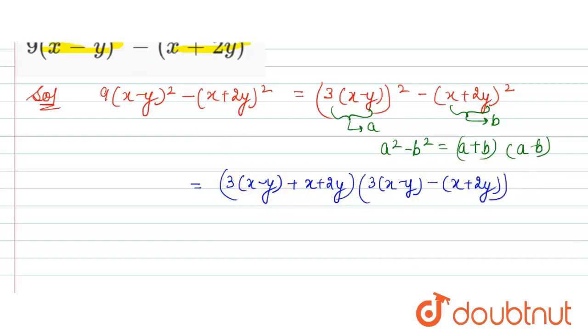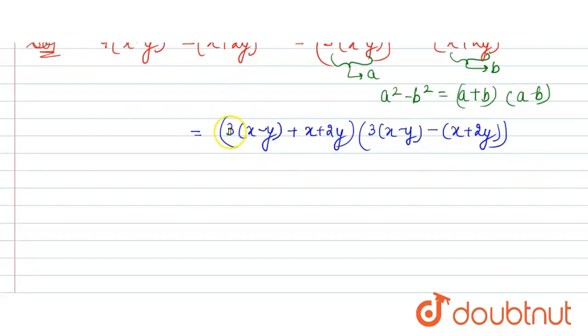Now when we further simplify, this 3 multiplies with x and 3 multiplies with y. When this minus comes inside the bracket, the positive sign becomes negative. So we can write it as [3x - 3y + x + 2y] × [3x - 3y - x - 2y].